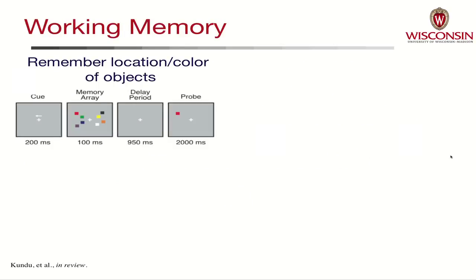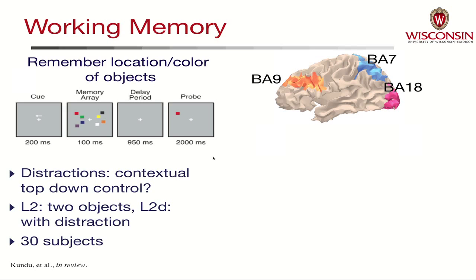I'm going to illustrate this work with a couple of examples of studies that we've done, all in collaboration with other researchers here on campus. The first one is working memory — a study of the networks involved in short-term memory, like when you remember a phone number while you're dialing it. The task the subjects were asked to do was to remember the locations and colors of objects in an array for about a second, and then they were tested with a probe to see if they remembered correctly. The specific study I want to highlight has to do with how brain networks change when there's a distraction present. Our hypothesis was that there would be additional top-down control.